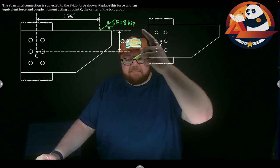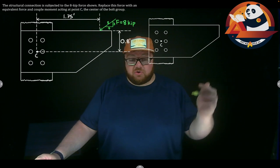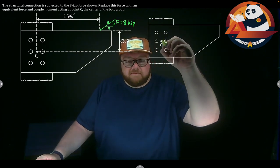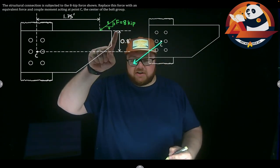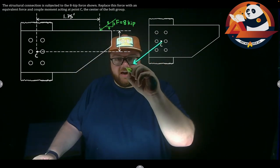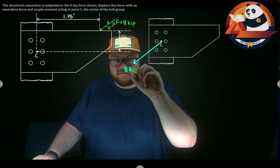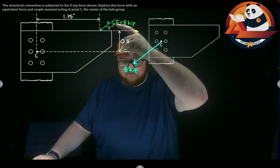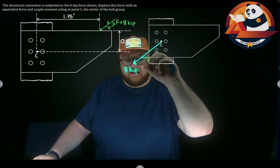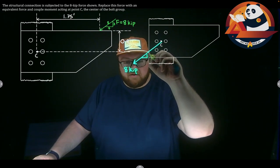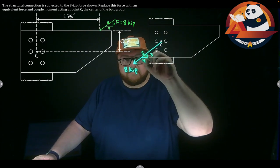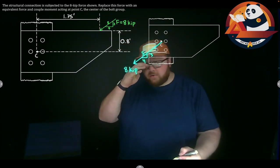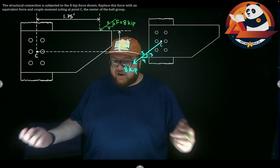Really all that I need to do is keep the same tendency to translate. We just directly move our force. Coming to the new picture, I still have acting in the exact same direction down and to the left an eight kip force, and it still is at a three-four-five triangle. That takes care of half of our work. We have the same tendency to translate.